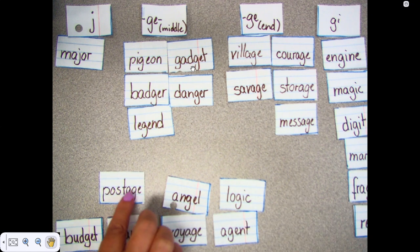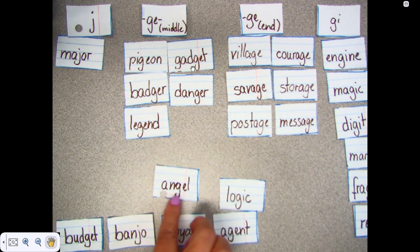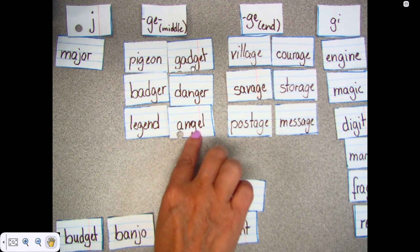Postage. Postage has the G-E at the end. Angel. There's an L after the J sound. Angel. So it's considered the middle.